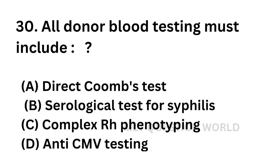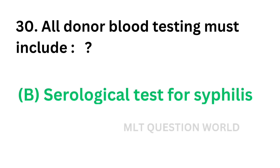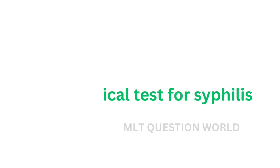Question No. 30. All donor blood testing must include: Option A: Direct Coombs test. Option B: Serological test for syphilis. Option C: Complete RH phenotyping. Option D: Anti-cytomegalovirus testing. The correct answer is Option B — serological test for syphilis, which is mandatory in screening blood donors.